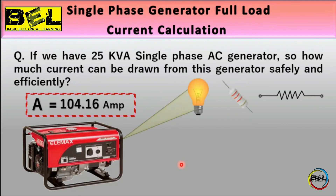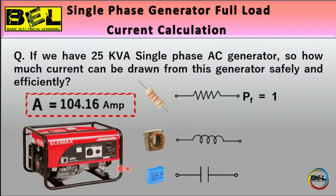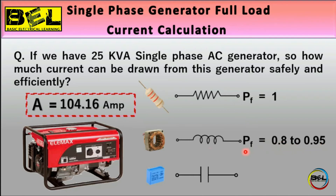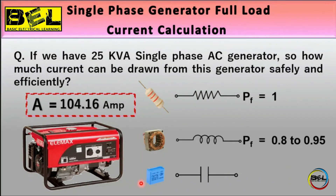Generators have different types of loads: resistive, inductive, and capacitive. The power factor for a purely resistive load is 1, and for a purely inductive load it is 0. For a combined resistive and inductive load, the power factor becomes 0.8. Since an AC generator typically has capacitive, inductive, and resistive loads combined, the effective power factor is approximately 0.8 to 0.95. We must include the power factor in our current calculation.